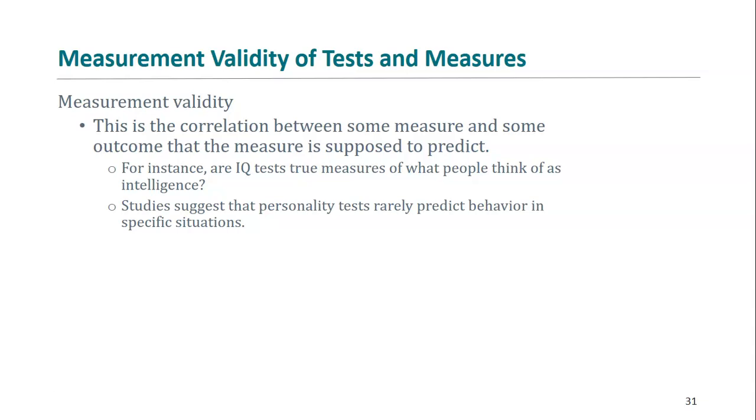One may have complete reliability without any validity at all. For example, if I have a bathroom scale that I step on every morning and it tells me that I weigh 50 pounds, it's completely reliable—I get the same result each time. However, it is not at all valid, as I do not weigh anywhere near 50 pounds.